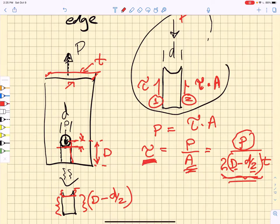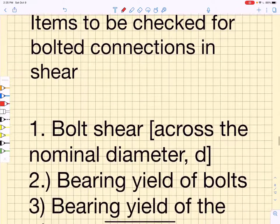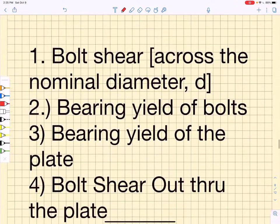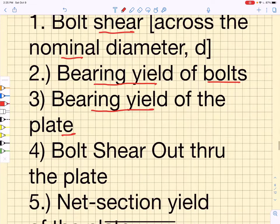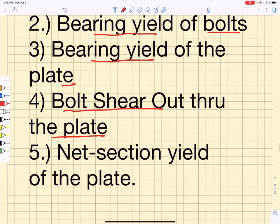I take the load that is applied through that bolt and divide it by that cross-sectional area to give me a shear tear-out stress. So in all cases, what we will be doing when we look at bolted connections is we're going to look at bolt shear across the nominal diameter of the bolt, we're going to look at bearing yield of the bolts and bearing yield of the holes in the plate, we're going to look at bolt shear out through the plate, and we're going to look at net section yield of the plate.